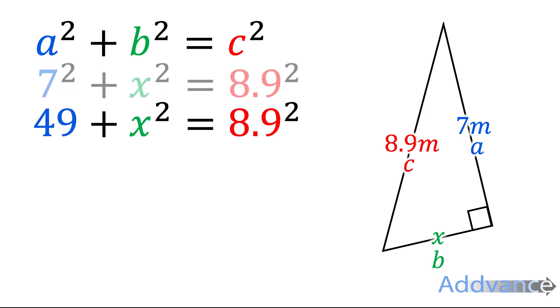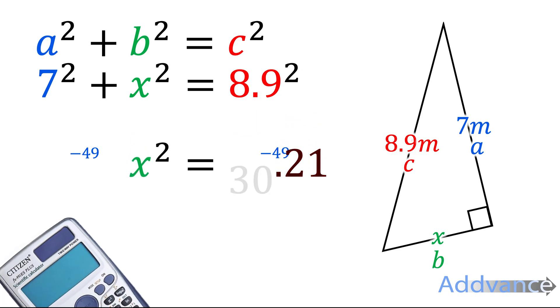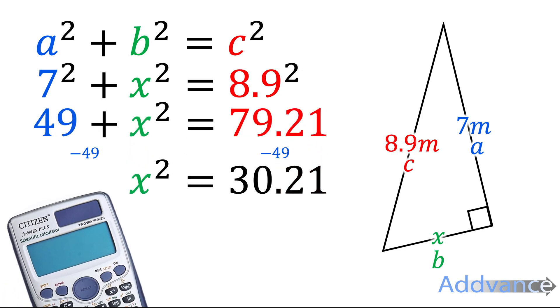7 squared is 49, and 8.9 squared, so you can use your calculator, is 79.21. Now, it says 49 plus X squared, so you can do the opposite of adding 49. We're going to subtract. So we subtract 49 from both sides, and we get X squared is equal to 30.21.